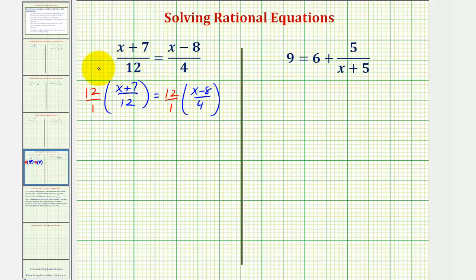Notice on the left side, 12 over 12 simplifies to 1, and on the right side, 4 and 12 share a common factor of 4. Four would simplify to 1 and 12 would simplify to 3.